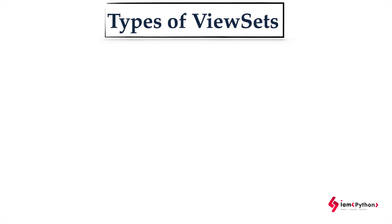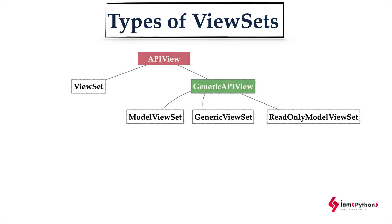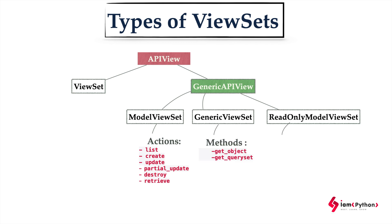Let's look into the types of view sets. There are different types. In previous sessions we discussed about API view, which is a super class for both view sets and generic API view. Generic API view also has subclasses like model view set, generic view set, and read only model view set. Under the model view set, only actions are provided — no method handlers. Generic view set has methods like get object and get query set. Read only model view set contains list and retrieve.